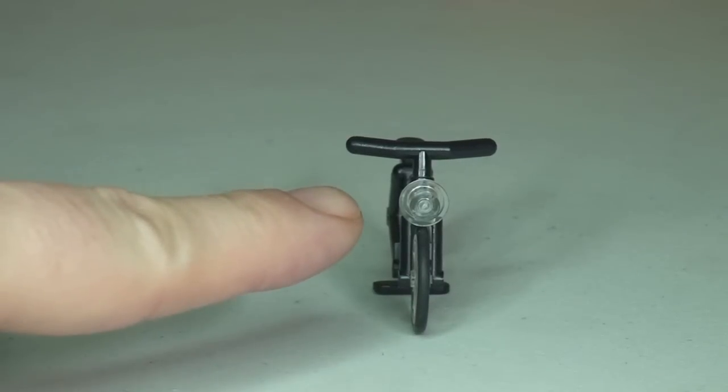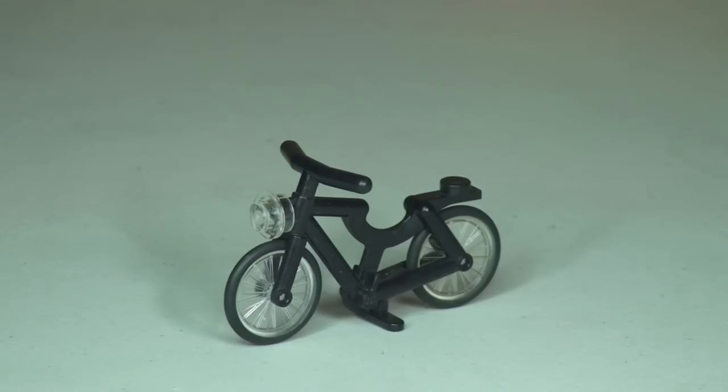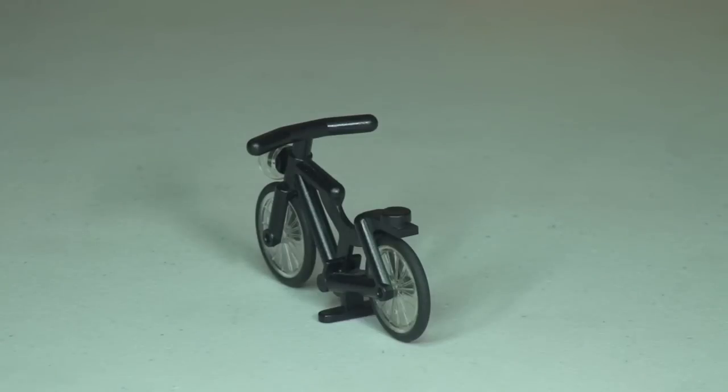Looking at the front of the bicycle there, if I just point to this area, this is a translucent clear stud piece used at the front to represent obviously a light at the front of the bicycle. And then just looking from an alternative angle there, and again there. So let's take a look at what this looks like with the minifigure on the bike.